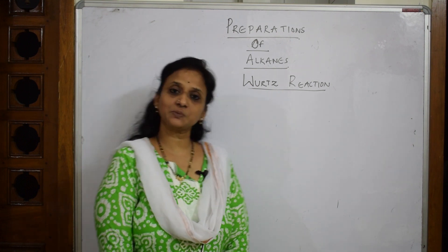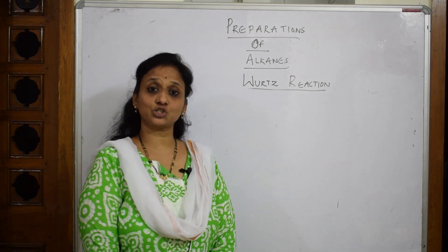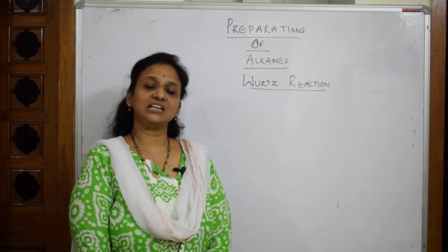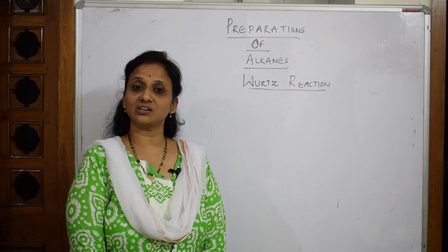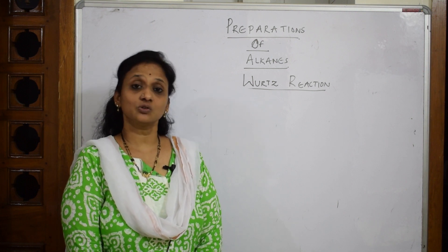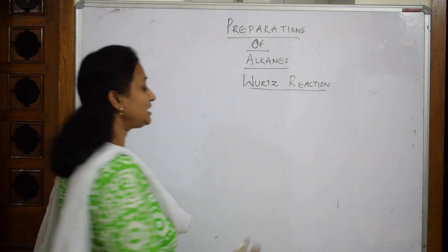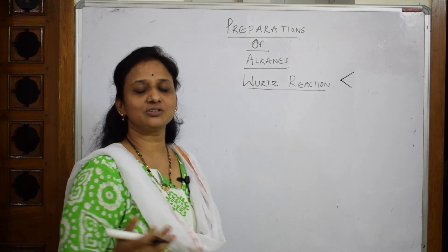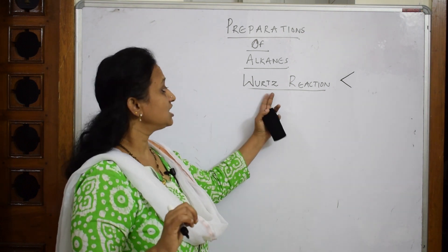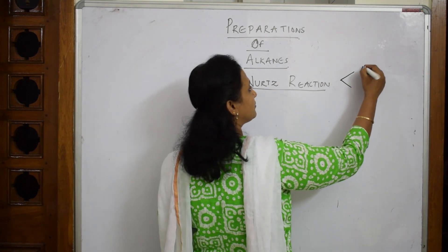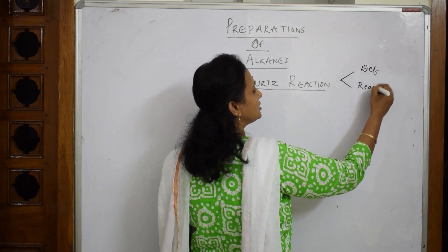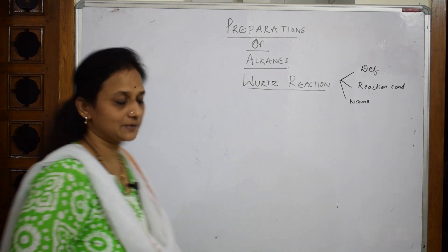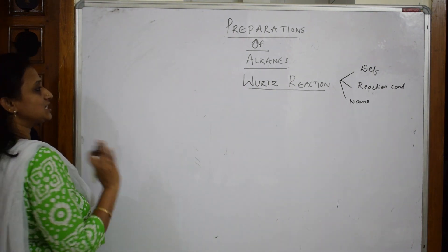The general formula of alkanes is CₙH₂ₙ₊₂. We are going to prepare alkanes using the Wurtz reaction. In grade 12, there are almost 70 name reactions. Whenever you write a name reaction, you need to write the definition, the reaction conditions, and name the reactants as well as the products.